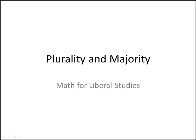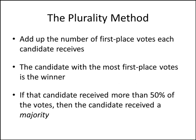In this video, we will study plurality and majority when we're talking about finding the winner of an election. The plurality method is probably the one you're most familiar with from regular elections you hear about on the news. All we do is add up the number of first place votes each candidate receives, and the candidate with the most first place votes is the winner. If that candidate received more than 50% of the votes, then we say that candidate received a majority, but you don't have to get a majority in order to be the plurality winner.